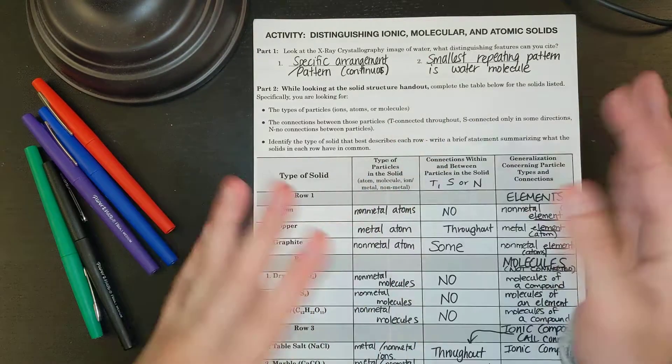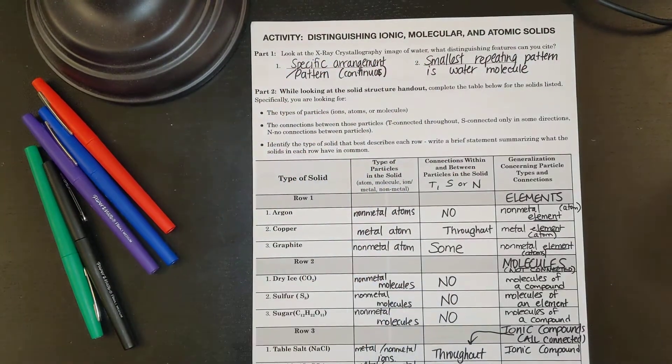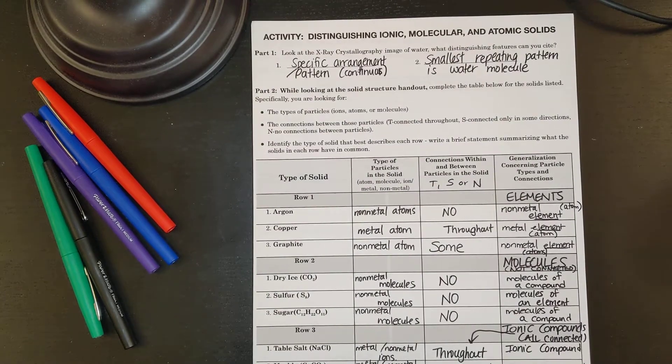All right, hey again, Honors Chemistry. So we're going to continue on with our activity, distinguishing ionic, molecular, and atomic solids.